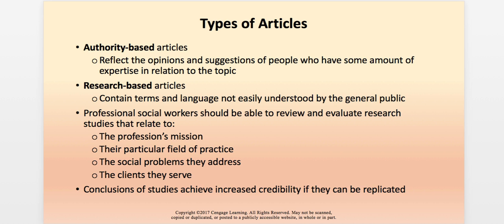The conclusions of studies achieve increased credibility if they can be replicated from study to study — the more we see something repeated, the more confidence we can have in it. In teaching sociology I used to talk about the concept of tentative truth: a study will tell us something is true, and in social sciences that remains true until another study comes along and disputes it with a different finding. That's why we should consider almost every research finding as tentative truth, because something may come along that totally disputes and changes our thinking.